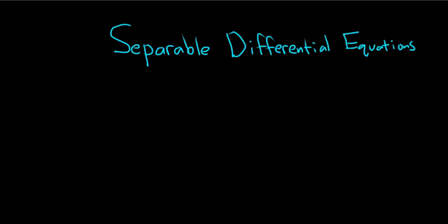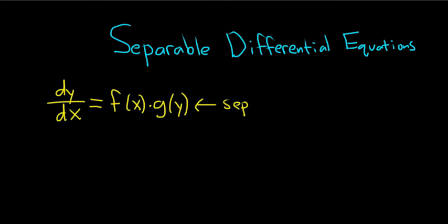A differential equation is separable if it can be written in the following form: dy/dx equals, and basically you can separate it. You have a pure function of x times a pure function of y. So if you have a DE that can be written in this way, we say it's separable because you can separate the variables.